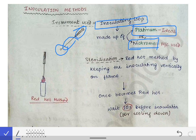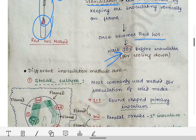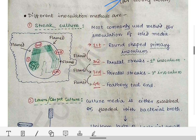Coming to the sterilization of the inoculating loop — sterilization is done by the red hot method. You keep the inoculating loop vertically at 90 degrees in the flame of a Bunsen burner or a candle, and wait until the loop area becomes red hot. Once it becomes red hot, remove the loop from the flame and wait about 10 seconds for it to cool down slightly before using it.